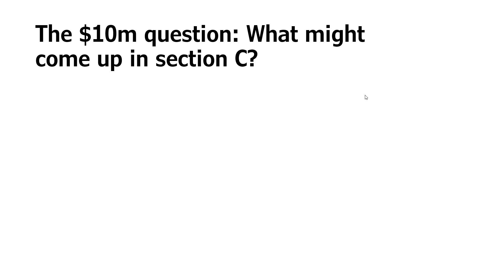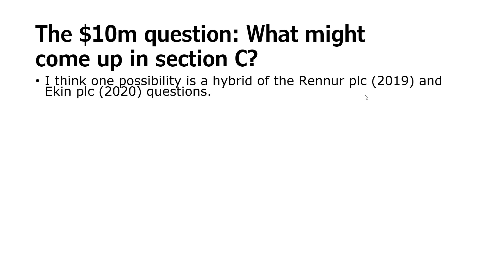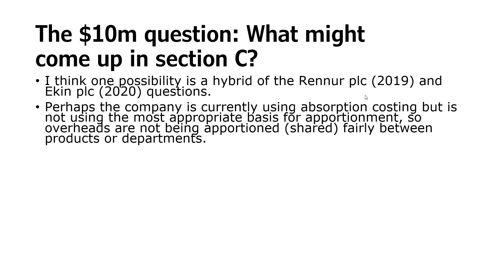So what could they ask us about? The $10 million question — what might actually come up? I think a distinct possibility is a bit of a hybrid of the Renner PLC question from 2019 — I've recorded a separate video on that — and the Eakin PLC question on activity-based costing, which also has another video. I'm going through both of those in considerable detail.